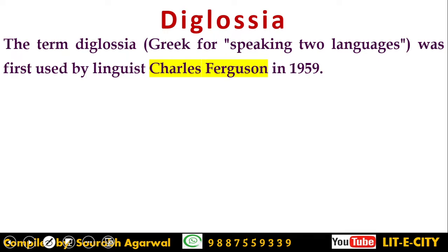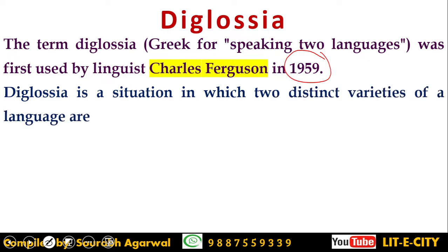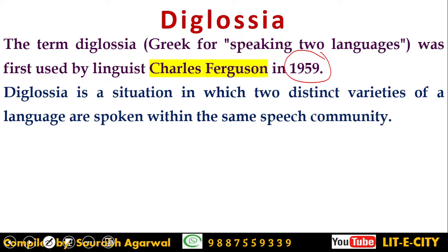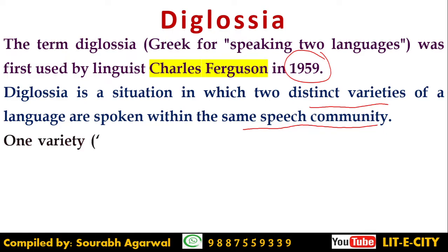Let's start with our first term, diglossia. The term 'diglossia' is actually a Greek term — 'di' means two and 'gloss' means words or language — so it means speaking two languages. It was first used in the sociolinguistic context by linguist Charles Ferguson in 1959. Diglossia is a situation in which two distinct varieties of a language are spoken within the same speech community, where one speaker uses two or more varieties of a particular language in different social contexts.